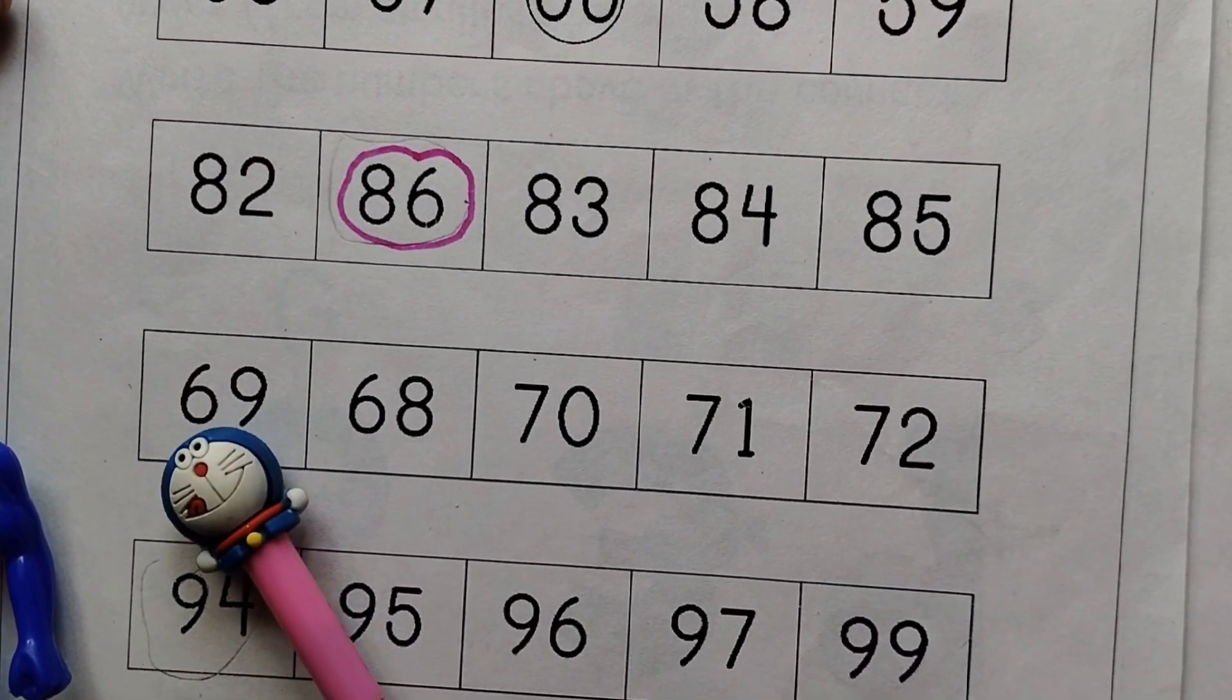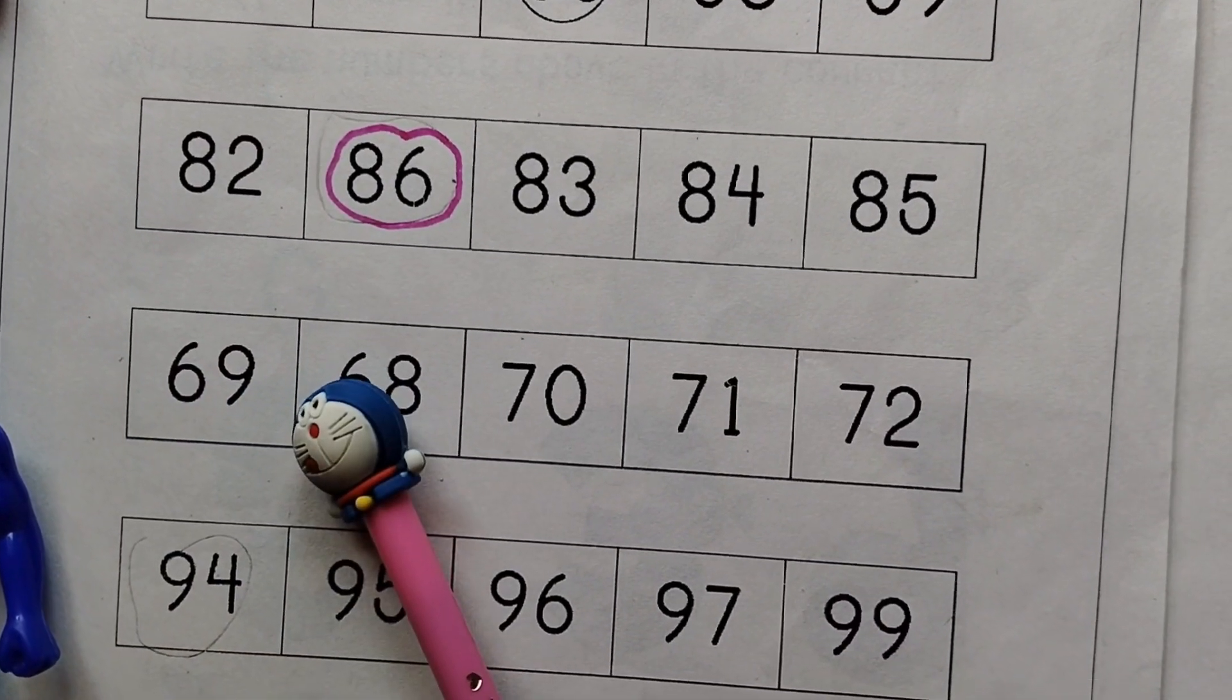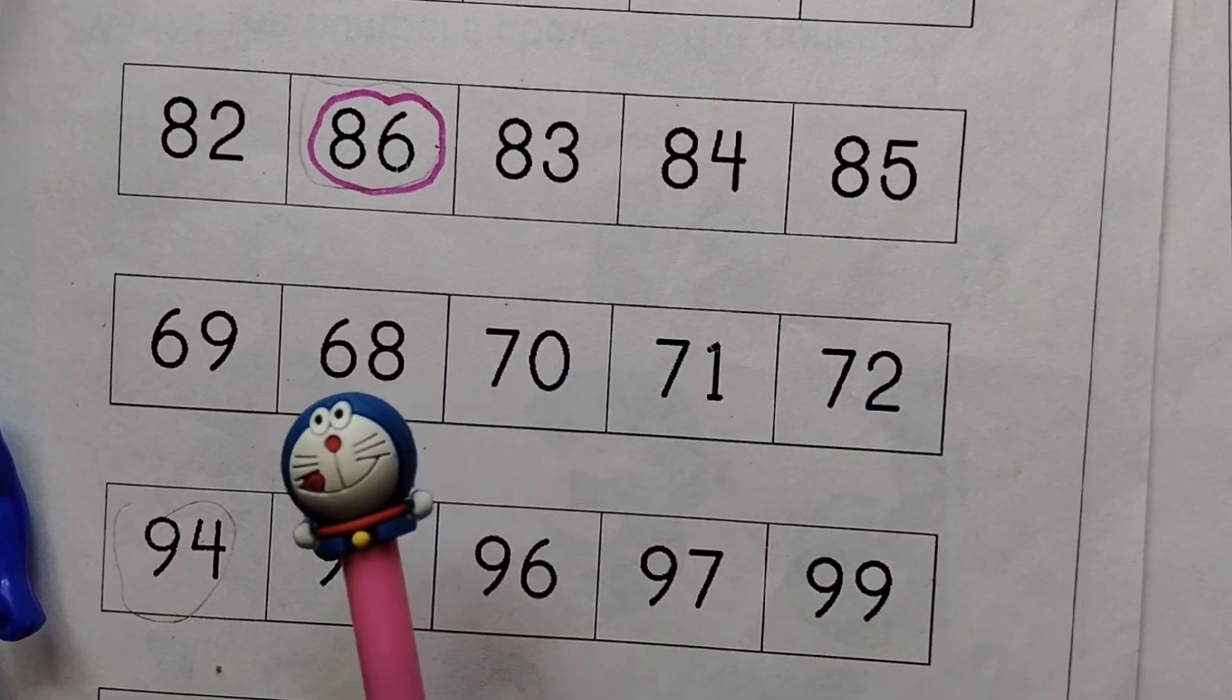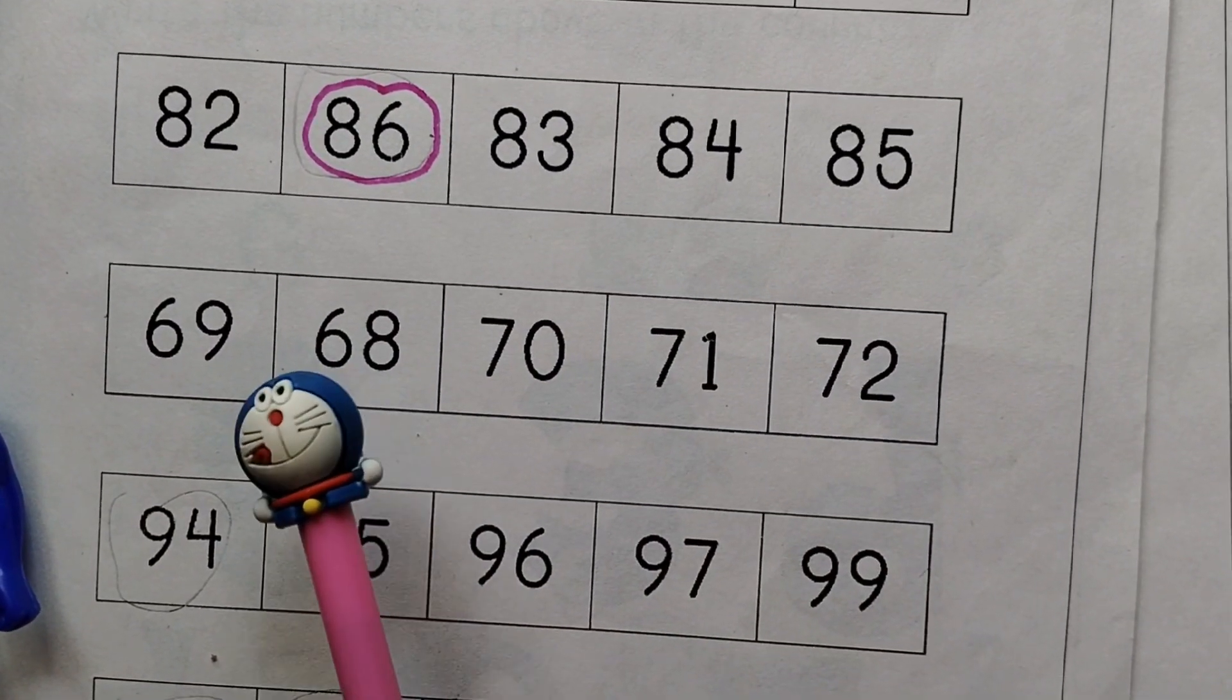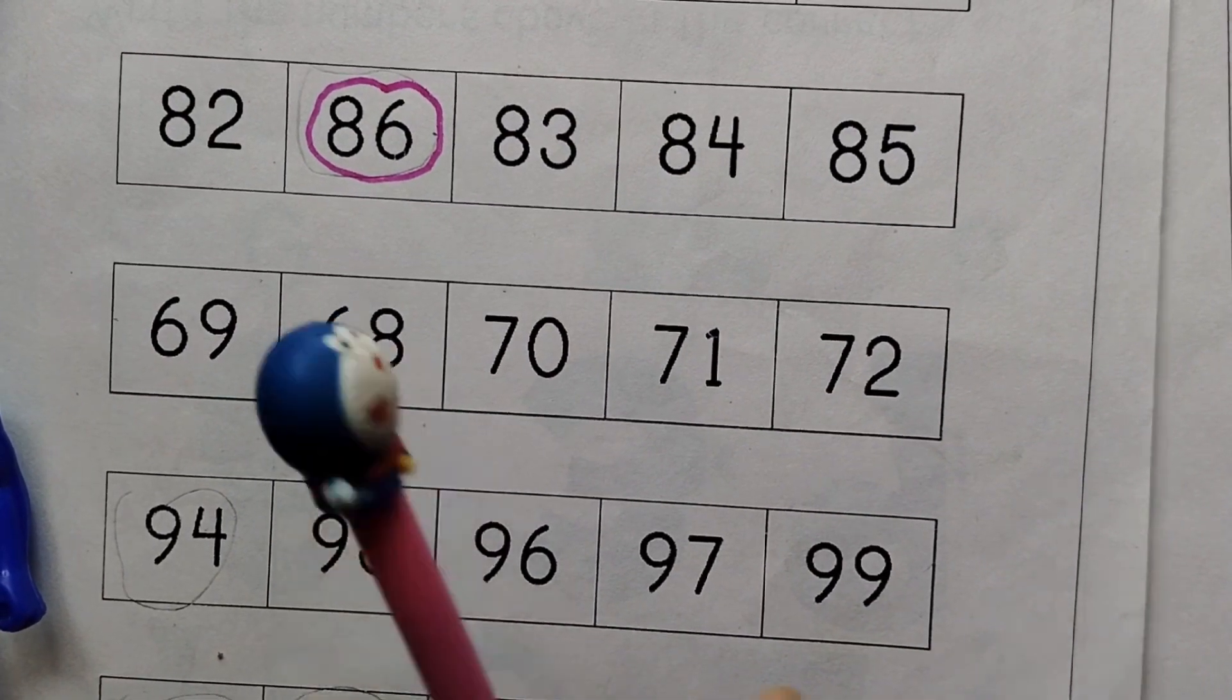69, 68, 70, 71, 72. 68 is the incorrect number in the sequence.